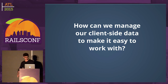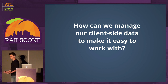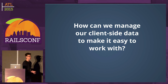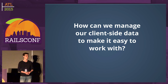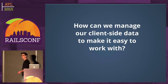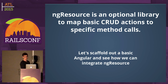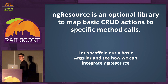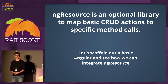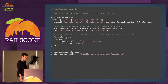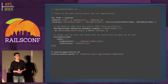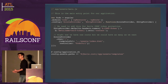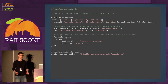For managing client-side data in Angular, instead of standard jQuery AJAX calls, we're going to use ngResource — an optional library that maps basic CRUD actions to specific method calls. We scaffold out a basic application. The entry point calls this 'todo,' including resource and route as examples of Angular's dependency injection. We do a little CSRF magic to make it work with Rails, then set up one route — the root route — injecting the todo controller.